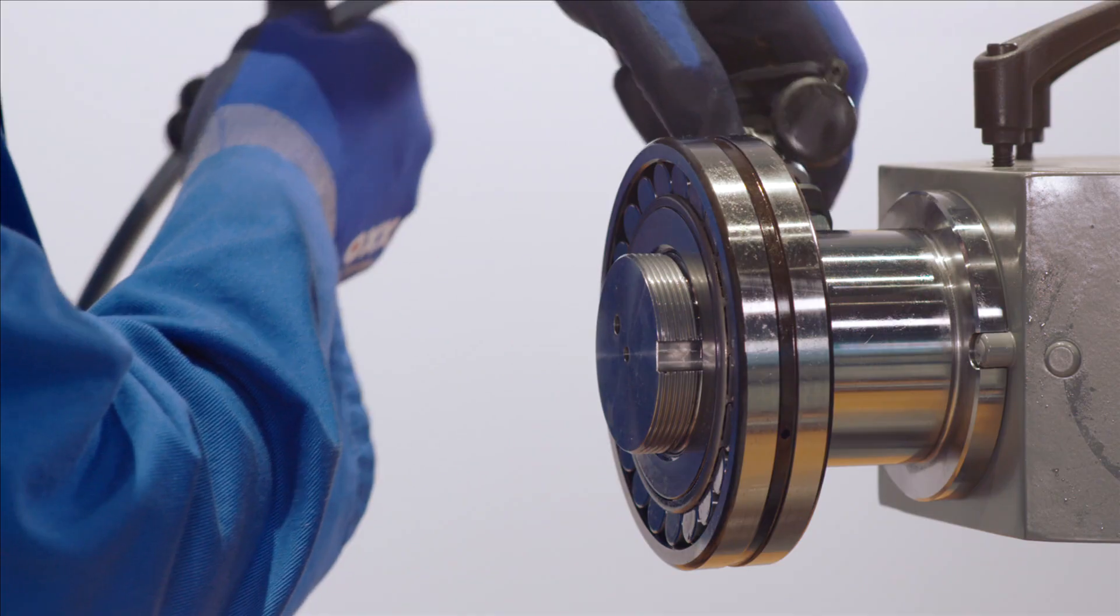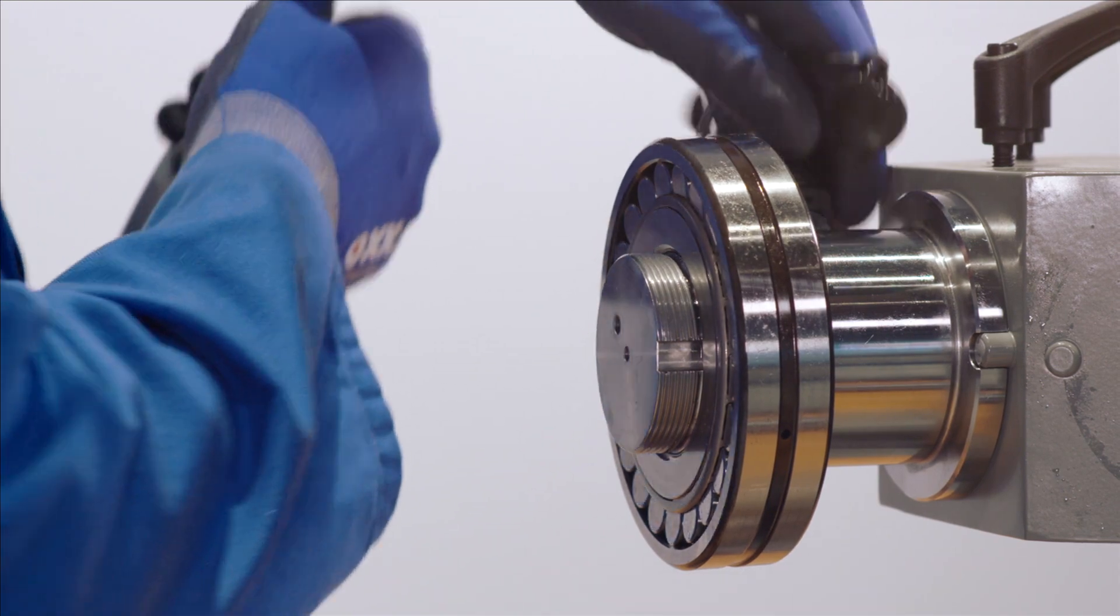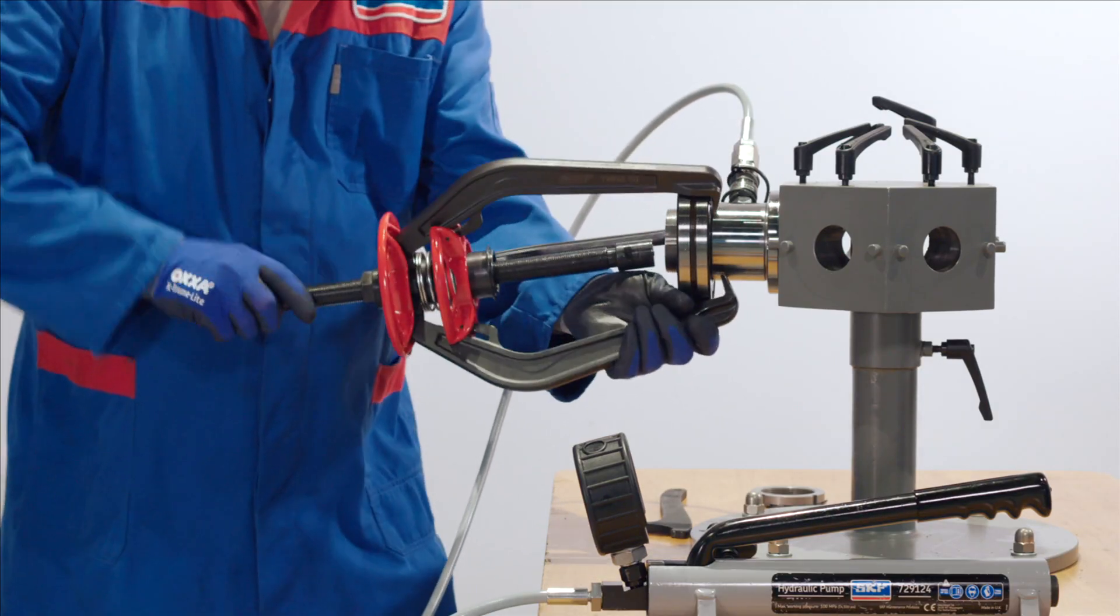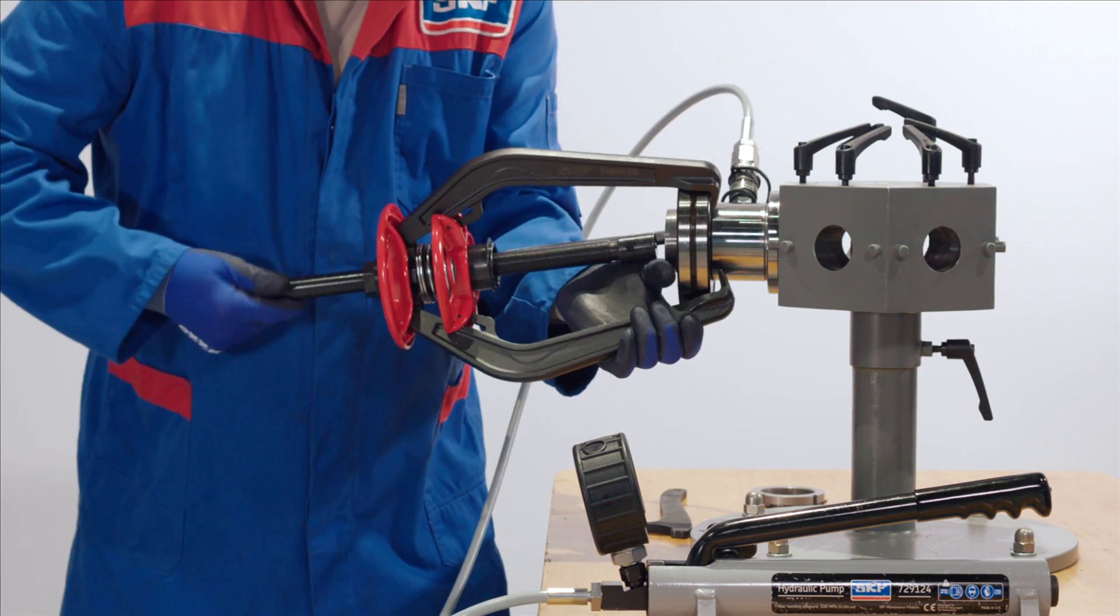After connecting the oil injection equipment, high pressure oil is pumped between the bearing bore and the shaft, whilst a jaw puller assists the removal of the tightly fitted bearing.